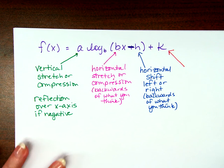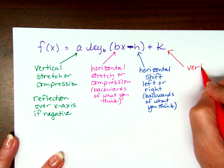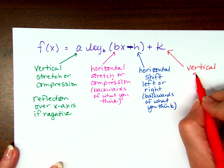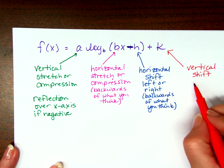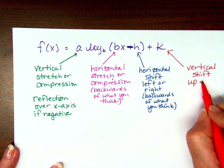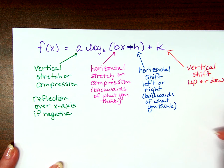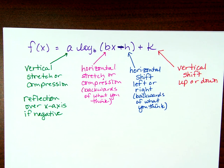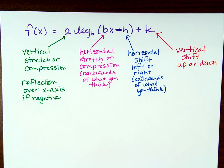All that leaves is our k. Our k is outside of the function, so we know that causes a vertical change. It's added or subtracted, so it is a shift. And since it's vertical, it's either up or down. But because it's a vertical change, it's going to be exactly what you think. If it's plus 2, you know you're going to move up 2. Any questions about graphing? You guys are super good at graphing, especially at transformations.